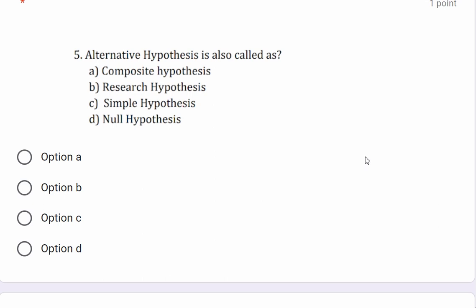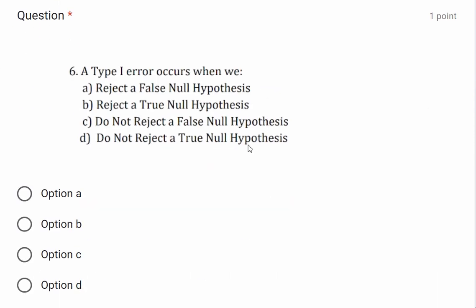Question: The alternative hypothesis is also called the research hypothesis. Next question: A Type 1 error occurs when we reject a true null hypothesis — Option B is the correct answer.